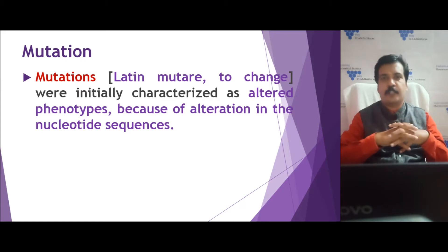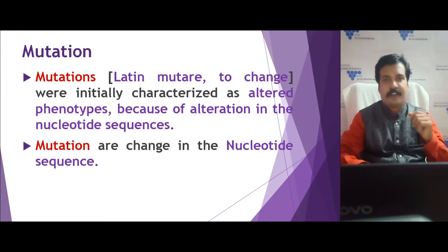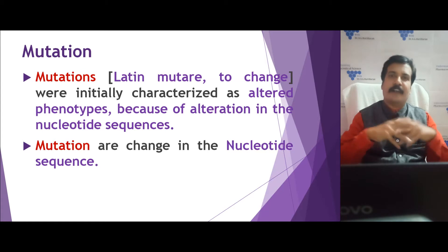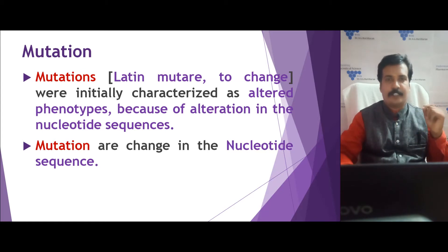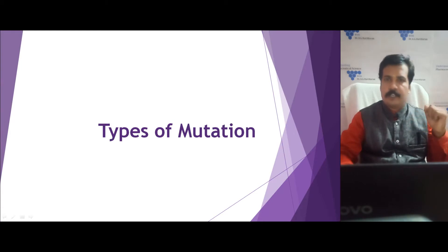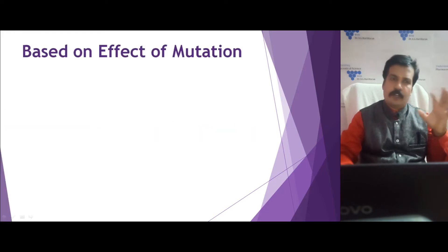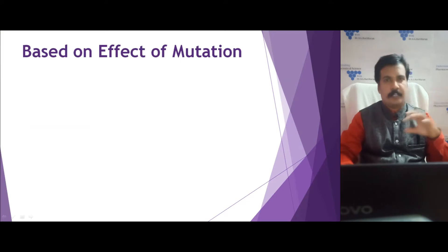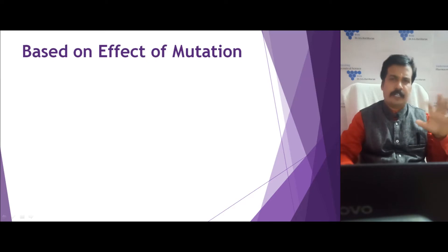That means the change in genotype causes the change in phenotype. Thereafter, we identified that mutation is nothing but a change in the nucleotide sequence — an alteration in the genetic sequence can lead to mutation. We can classify mutation into different types based on how it occurs, the effect of mutation, or changes in the protein sequence. One classification is based on the effect of mutation — the end product — and based on that we can classify into three major types.